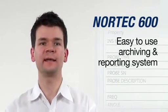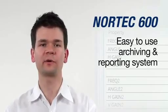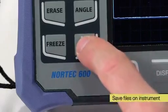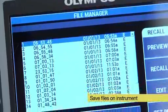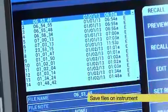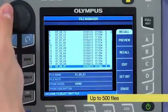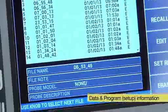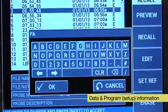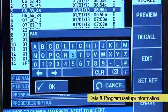The Nortec 600 features an easy to use archiving and reporting system. A single press of the save key instantly creates a file on the instrument. The instrument can store up to 500 files. Each file includes both data information and program or setup information, so there is never any disconnect between programs or data files.